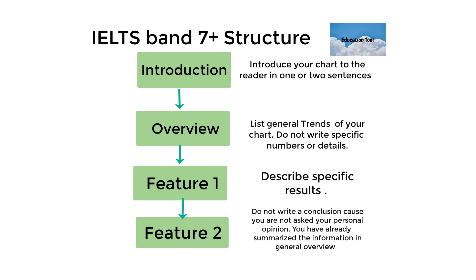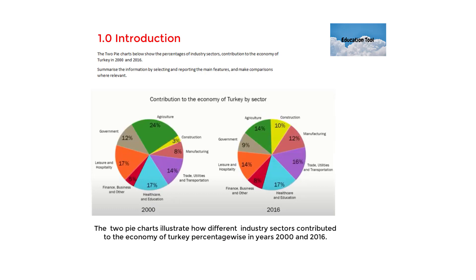To achieve a band of seven and above in writing task one, your essay must consist of four parts: introduction, overview, feature one, and feature two. In the introduction, you must introduce your chart to the reader in one or two sentences. In the overview, list general trends of your chart — don't write specific numbers or details. In feature one and feature two, describe your specific results. Don't write a conclusion because you're not asked for your personal opinion.